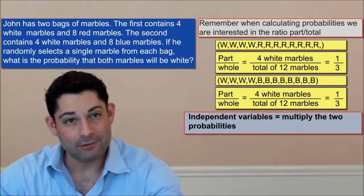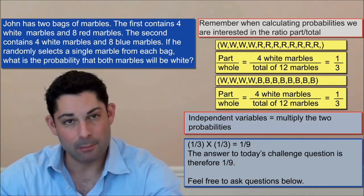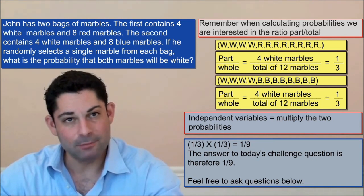So the final step to answering our question is to multiply the two probabilities, one-third times one-third. So the answer to today's question is one-ninth. The probability of selecting a white marble from each bag is equal to one-ninth.